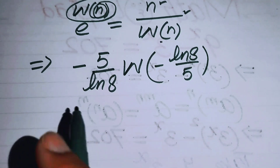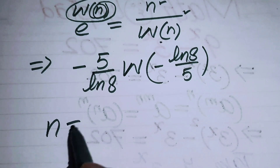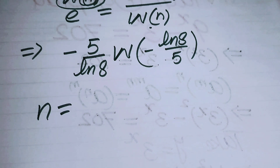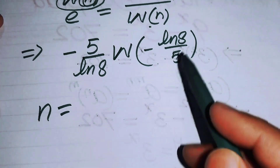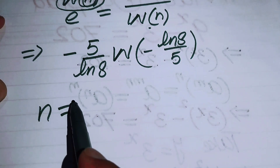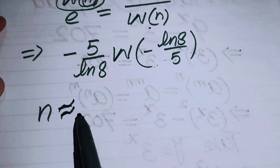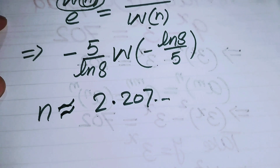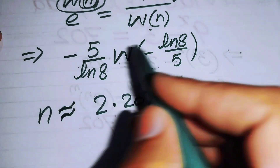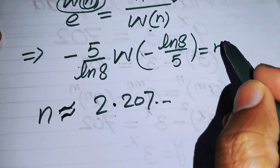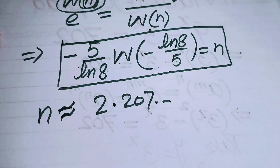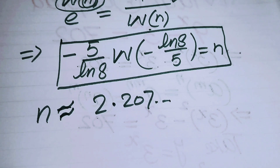To find the exact numerical value, you can use Wolfram Alpha to evaluate this expression. Our final answer is approximately n ≈ 2.207. Thank you so much for watching this video — please subscribe to my channel for more exciting videos.